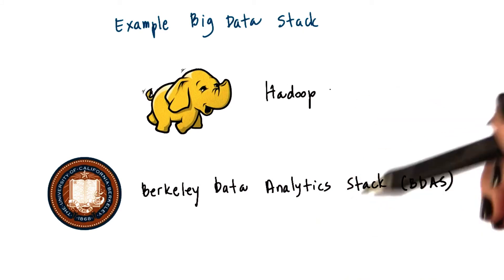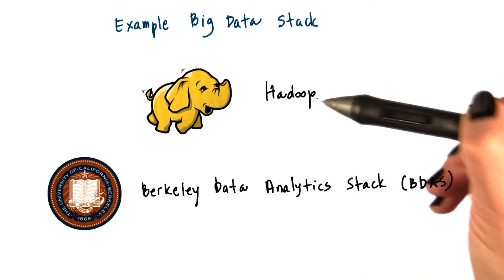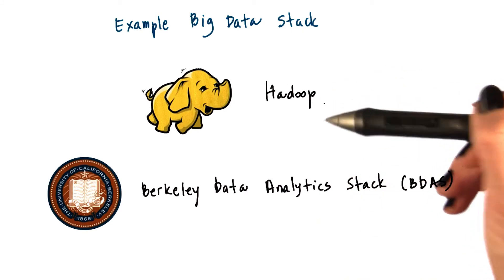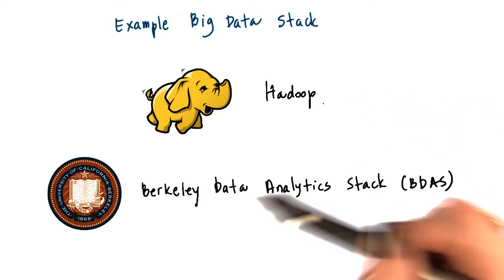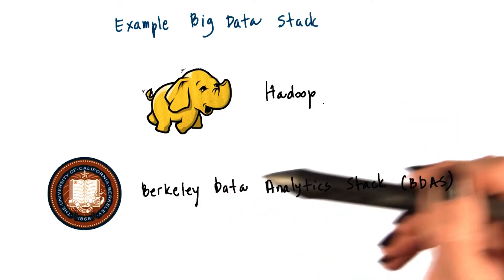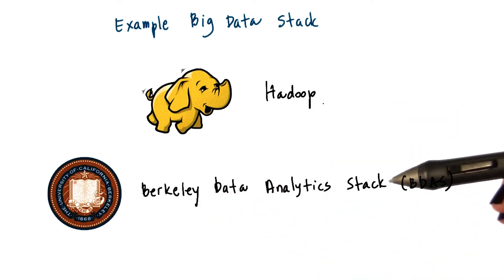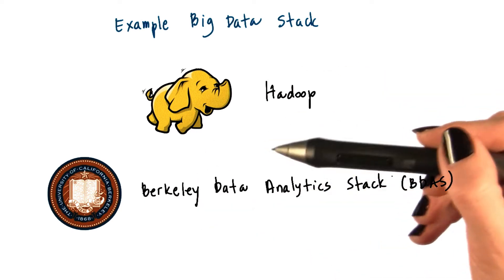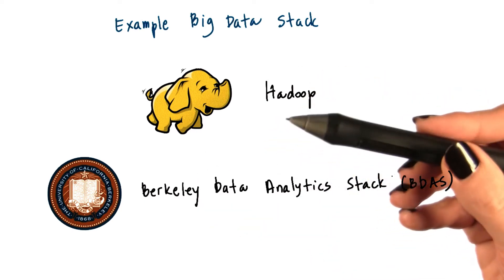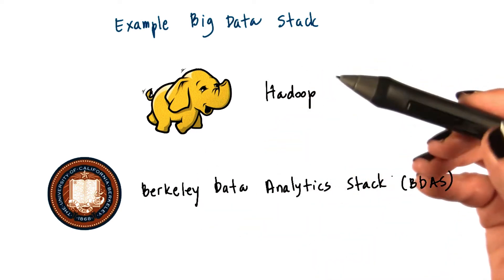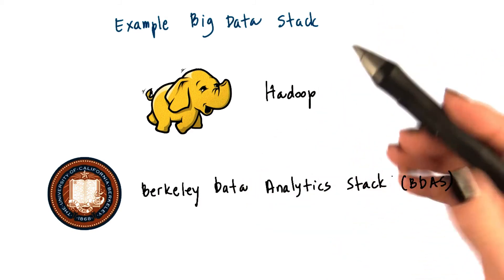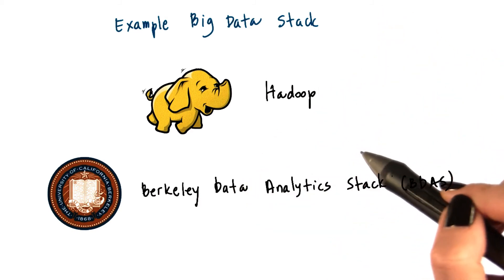The two concrete stacks are the Hadoop big data stack, which is an open source stack, and the Berkeley Data Analytics Stack, BDAS, which is also an open source stack. These are not the only options — there are a number of both proprietary stacks and other open source stacks.